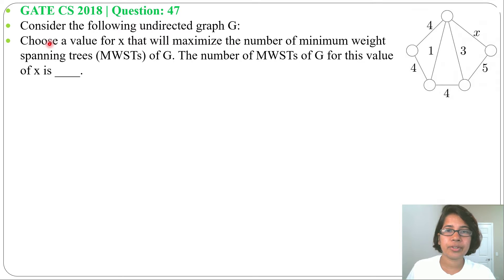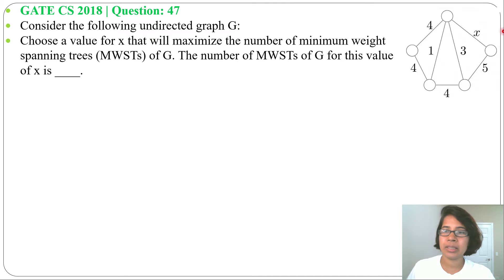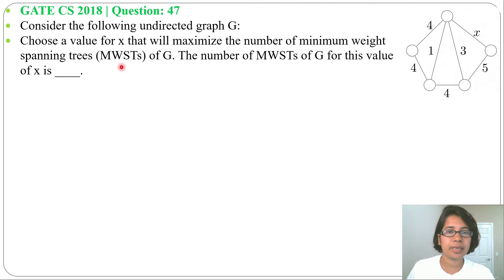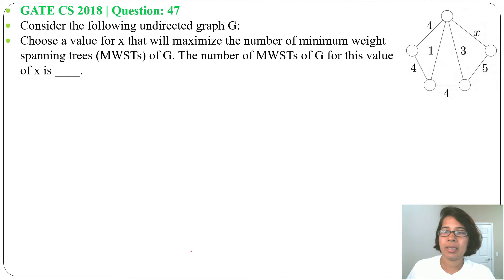Let's look at a previous question on the greedy technique. This question was asked in GATE CH 2018, question number 47. Consider the following undirected graph G. We need to choose a value of x that will maximize the number of minimum weight spanning trees of G, and find how many minimum spanning trees exist for that value of x.